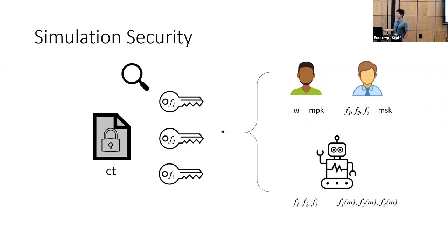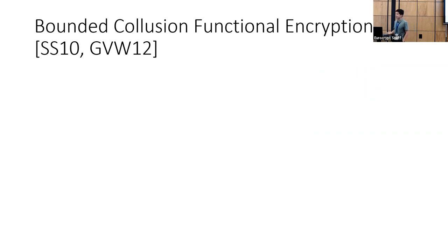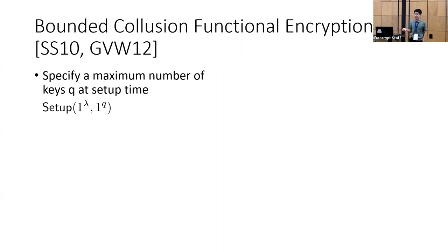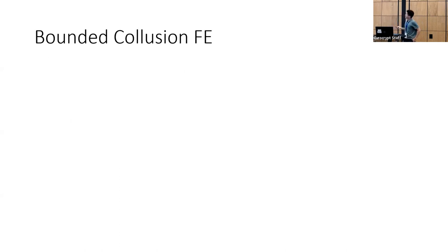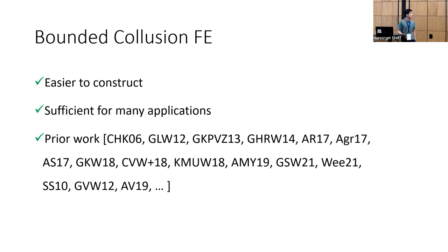Functional encryption has turned out to be a pretty cool concept, but the downside is that it has turned out to be pretty hard to construct. A relaxation of this is the definition of bounded collusion functional encryption, where correctness works almost exactly the same as regular functional encryption. The only syntactical difference is that at setup time, you also take in a collusion bound Q, and you only guarantee security as long as an adversary gets to see Q or fewer keys.